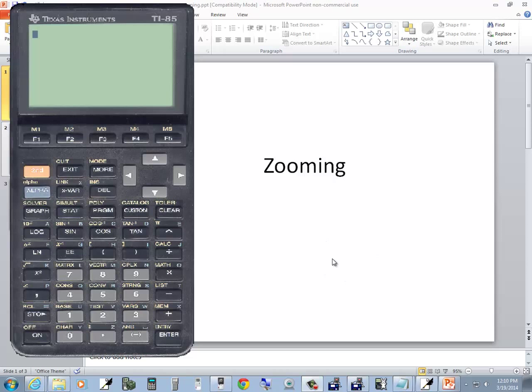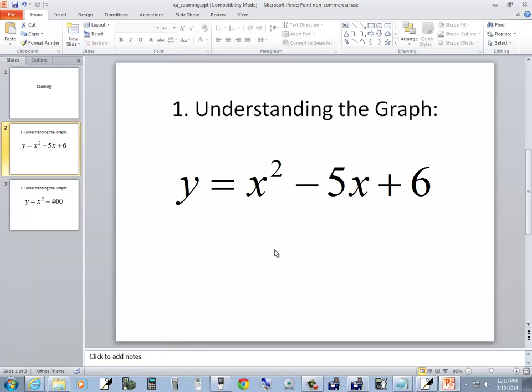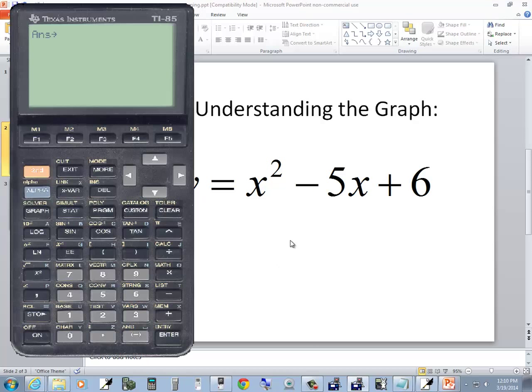Let's take a look at zooming on a TI-85 calculator. The first one we'll look at is x squared minus 5x plus 6. Now the assumption is that you know how to graph on your calculator. If you don't, then you should go watch the videos on graphing on a TI-85.